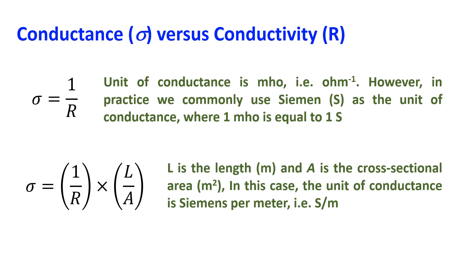Conductance is related to conductivity but takes into account the physical dimensions of the material. Conductance is directly proportional to the cross-sectional area and inversely proportional to its length: sigma equals (1/R) times (L/A), where L is the length in meters and A is the cross-sectional area in square meters. A material with a large cross-sectional area and shorter length will have higher conductance than one with a smaller area and longer length, even if they share the same conductivity. In this case, the unit of conductivity is Siemens per meter (S/m).